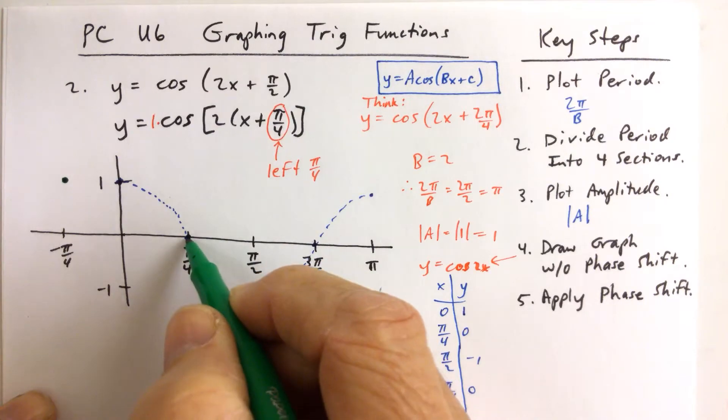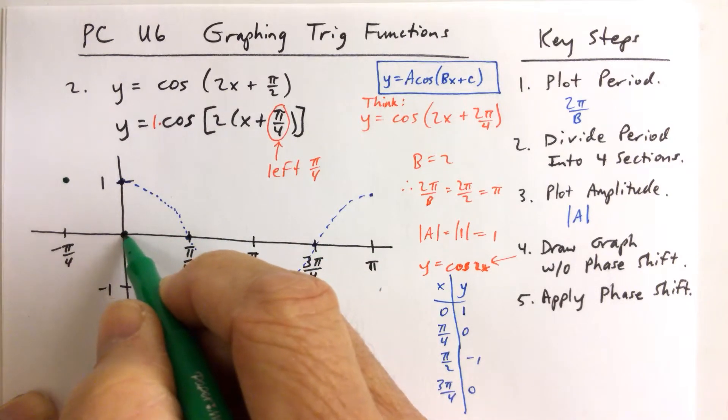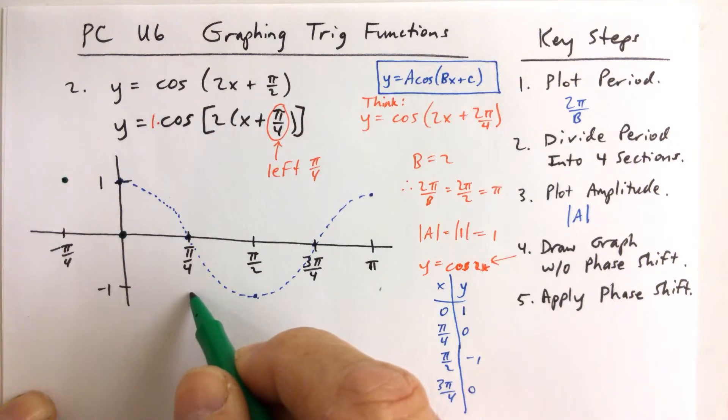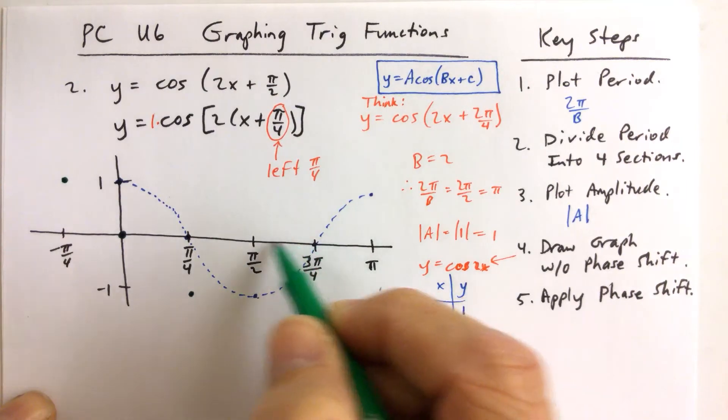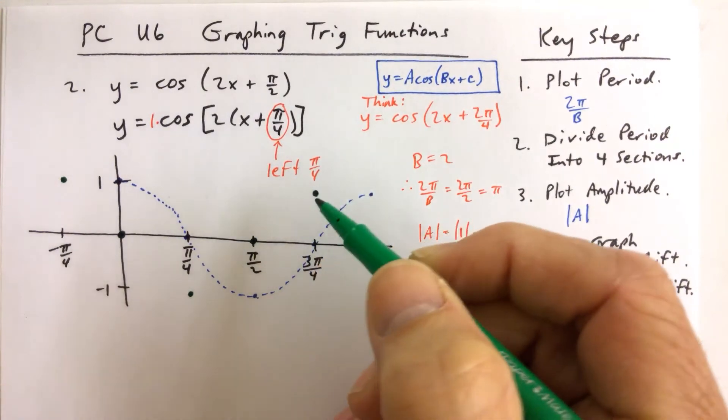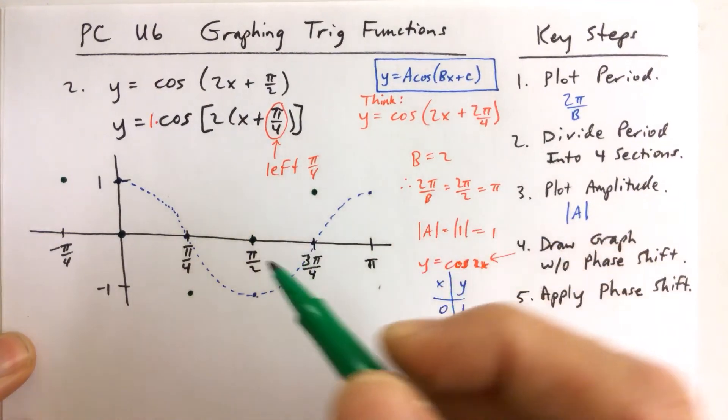This point here, which has an x coordinate of pi over 4, goes to the left pi over 4, and so on and so on. You just move one tick mark to the left.